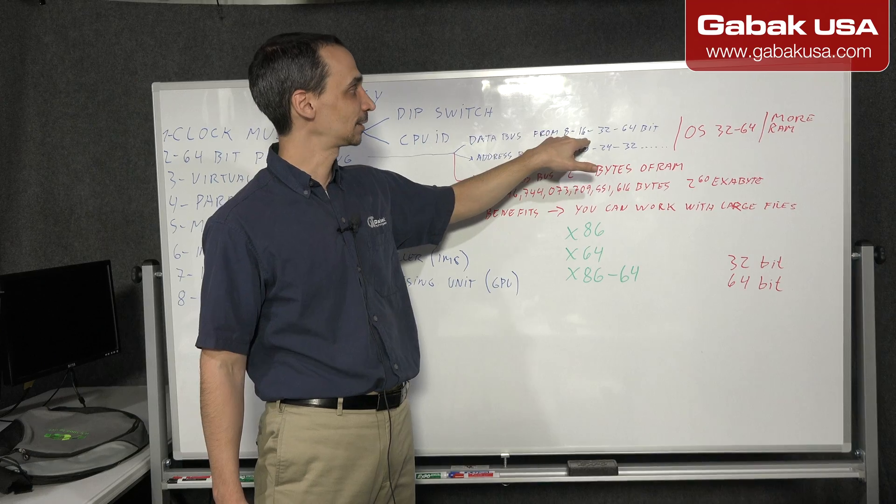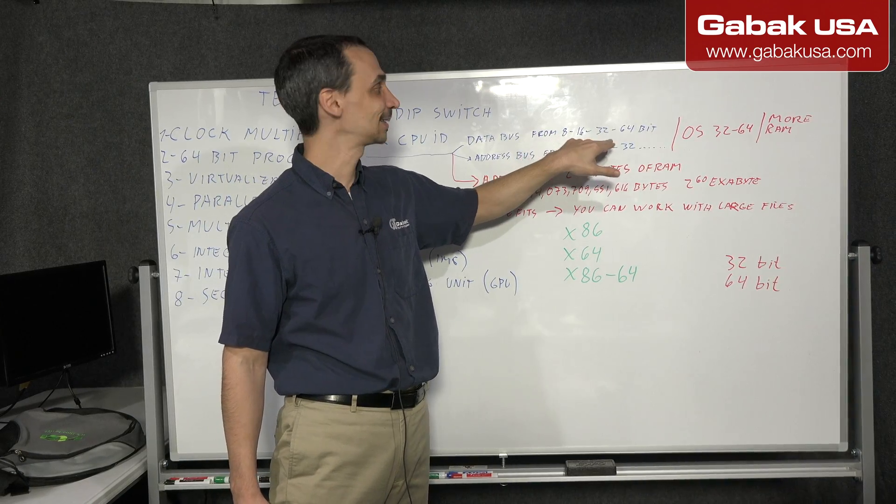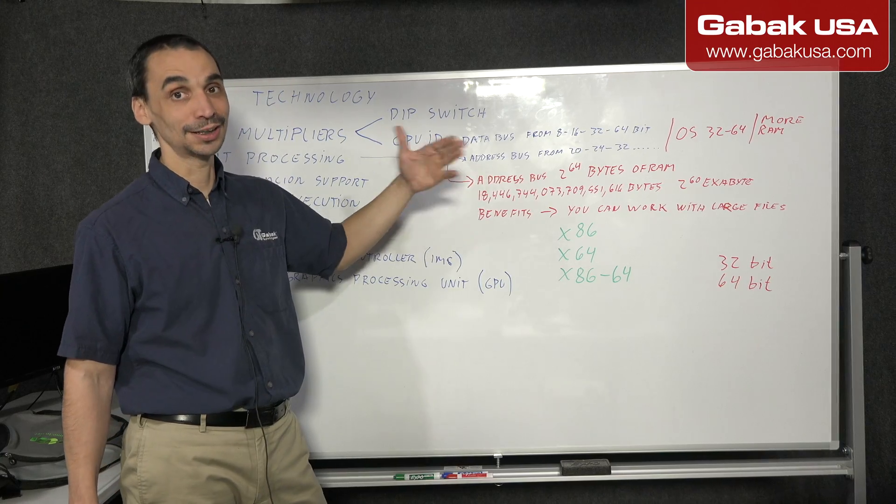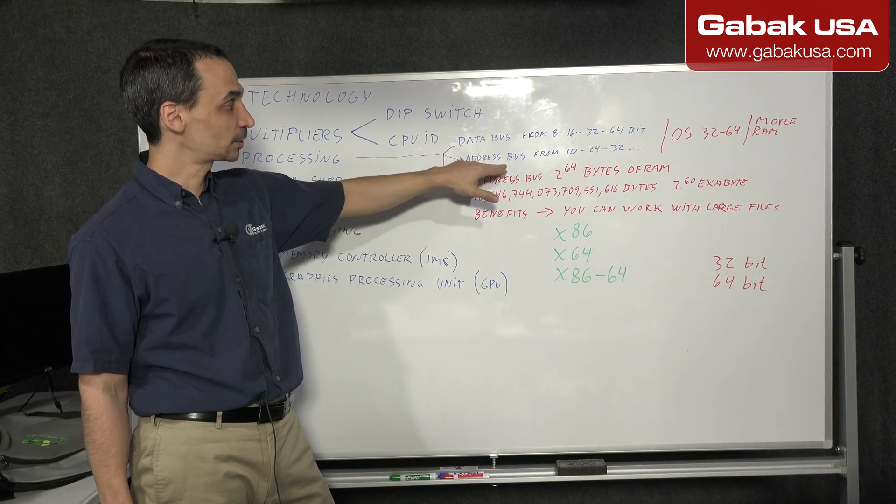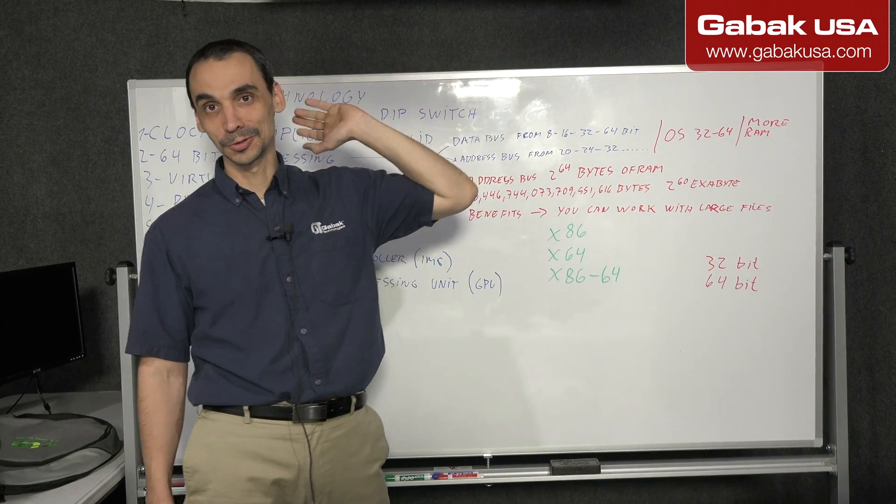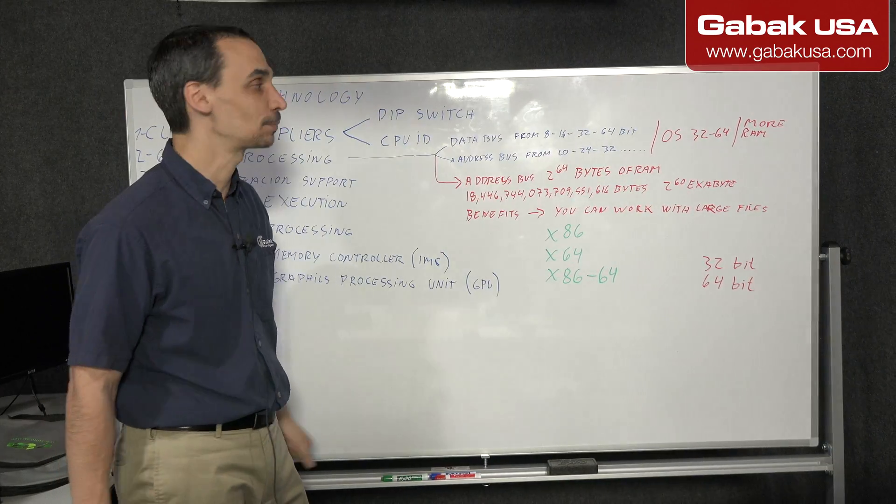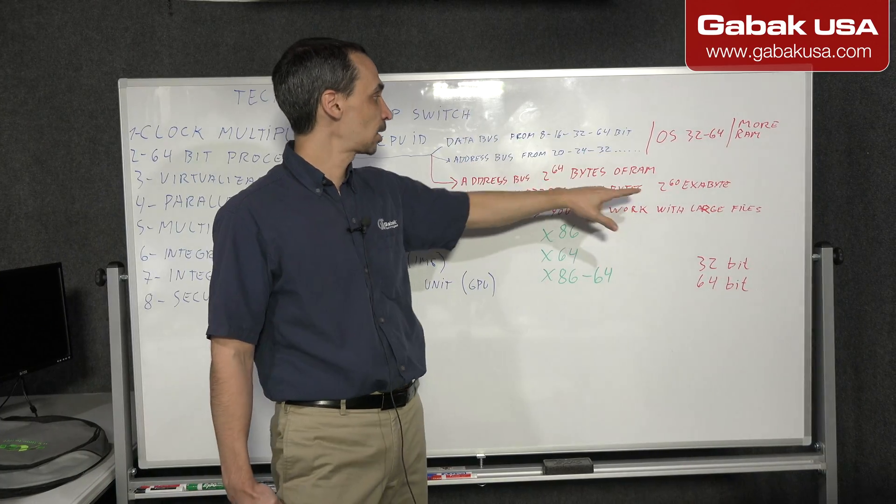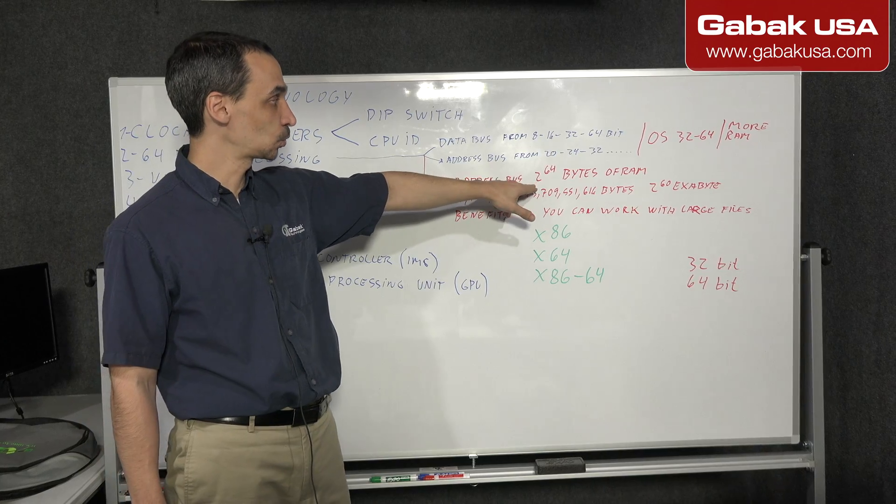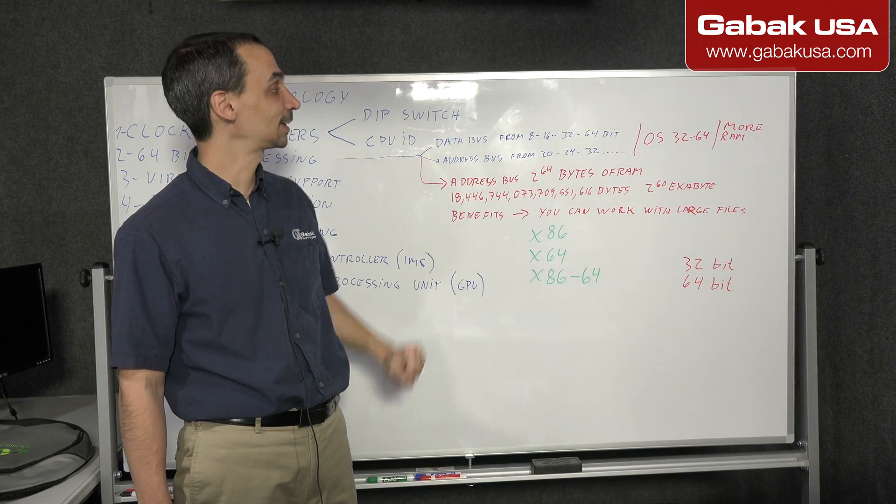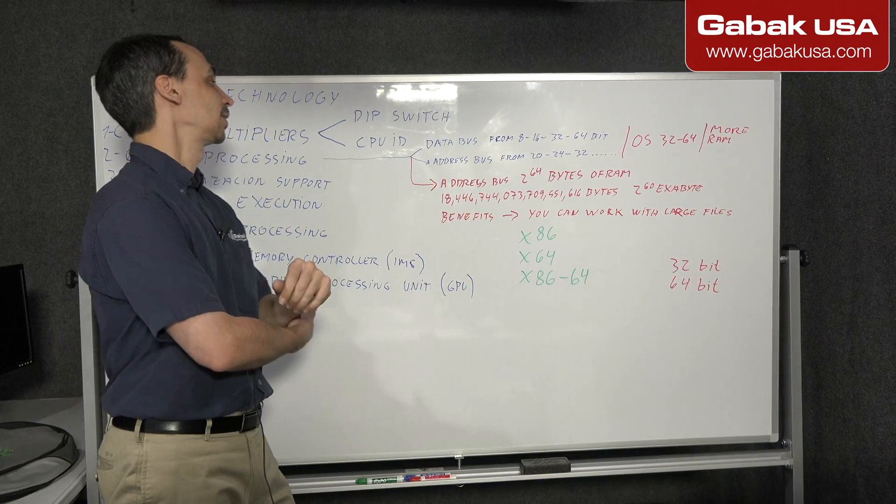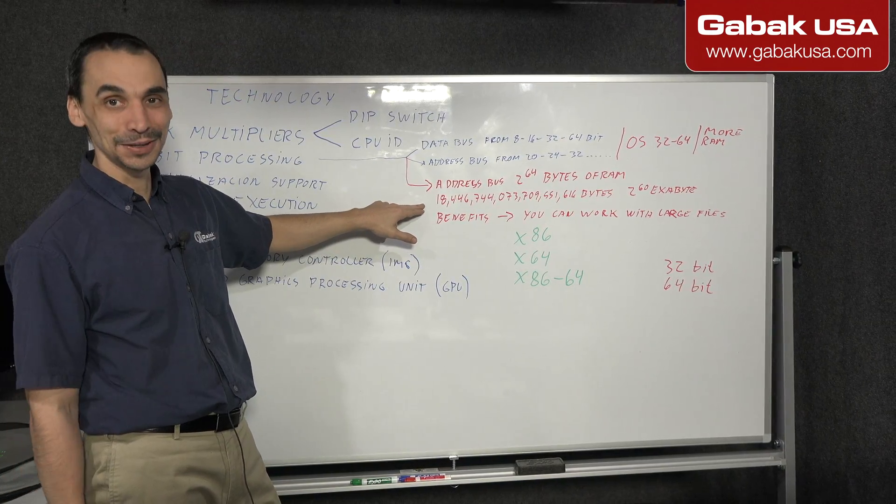Over time, they started creating 16, 32, 64. And they increased the sizes of the address bus from 20, 24, 32. And surely in the future will be more. Now we are going to talk about the address bus. You have two to the power of 64 bytes of RAM. That would be a huge number. This is the number that you see here. It's huge.